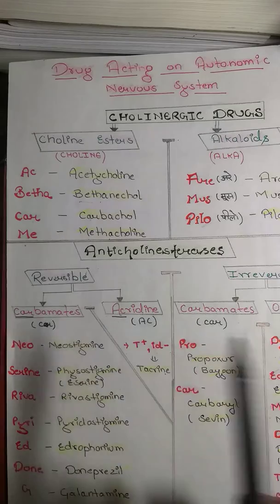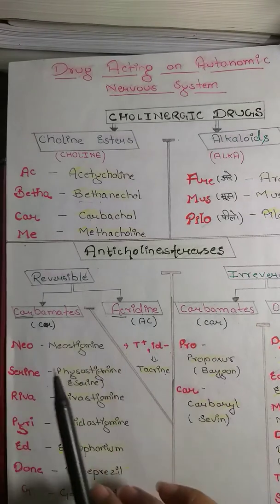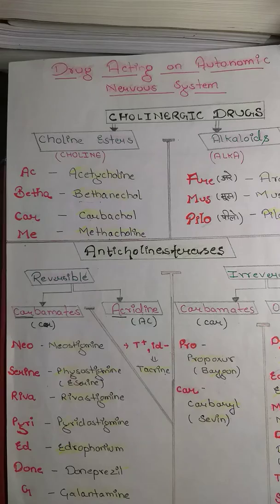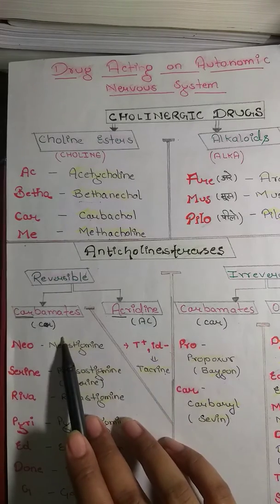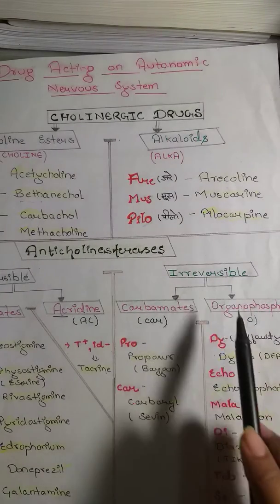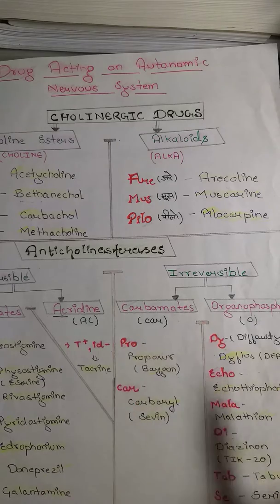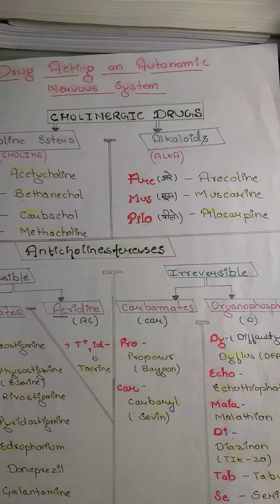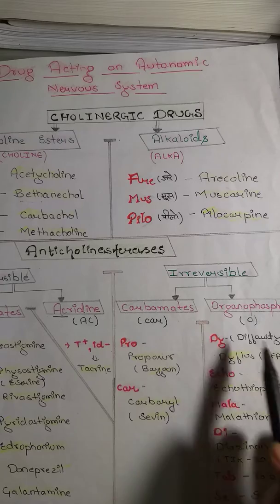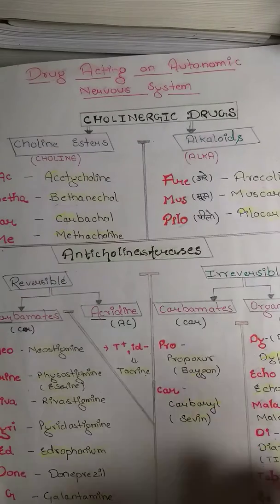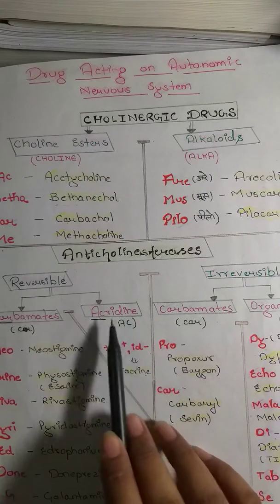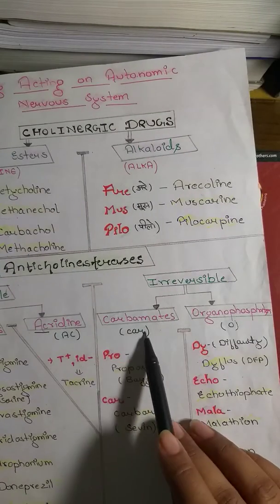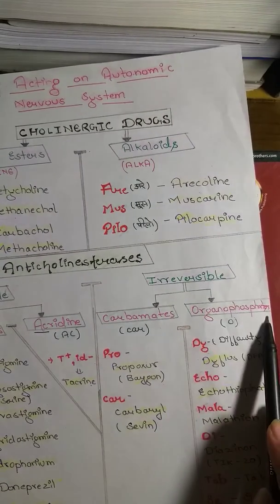Reversible is also divided into two parts. We will remember that the reversible one has the mnemonic AC, but the irreversible one has O-CAR. Reversible is AC — AC for Acridine, CAR for Carbamates — but O is for Organophosphate.